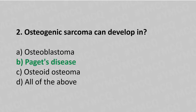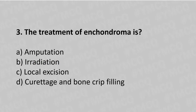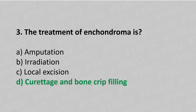Now let's move to question number 3. The treatment of enchondroma is — option A: amputation, option B: radiation, option C: local excision, option D: curettage and bone chip filling. The answer is option D: curettage and bone chip filling.